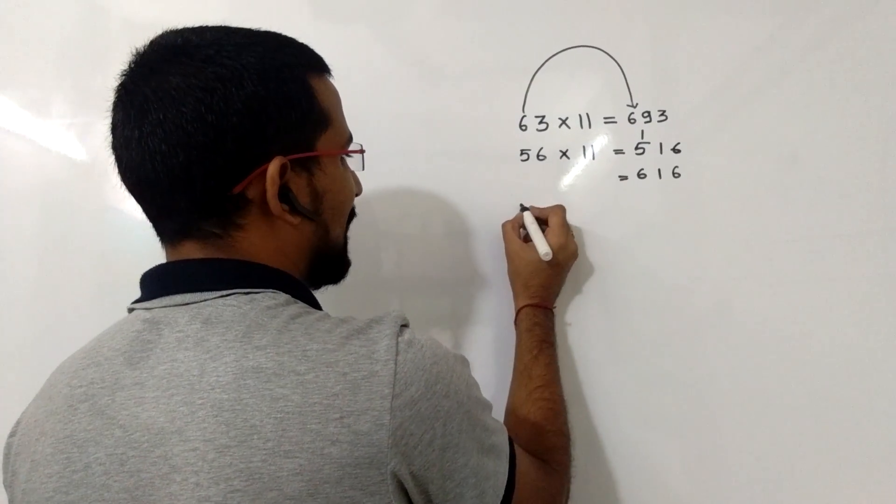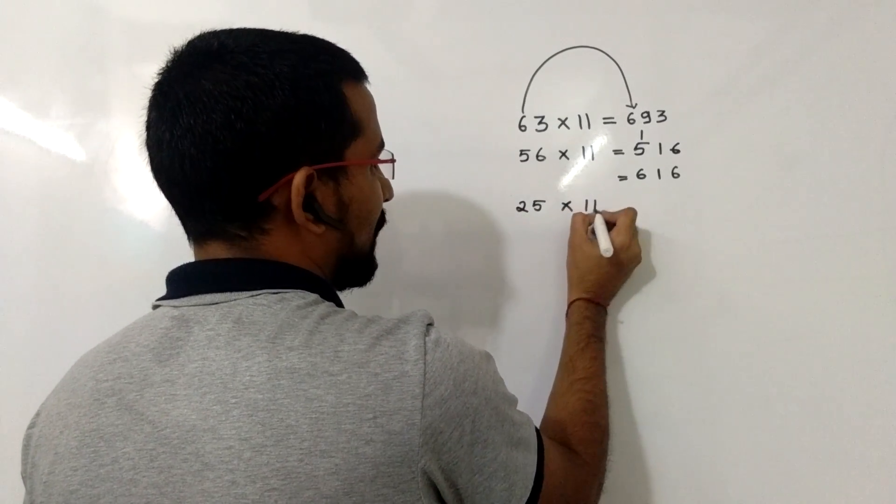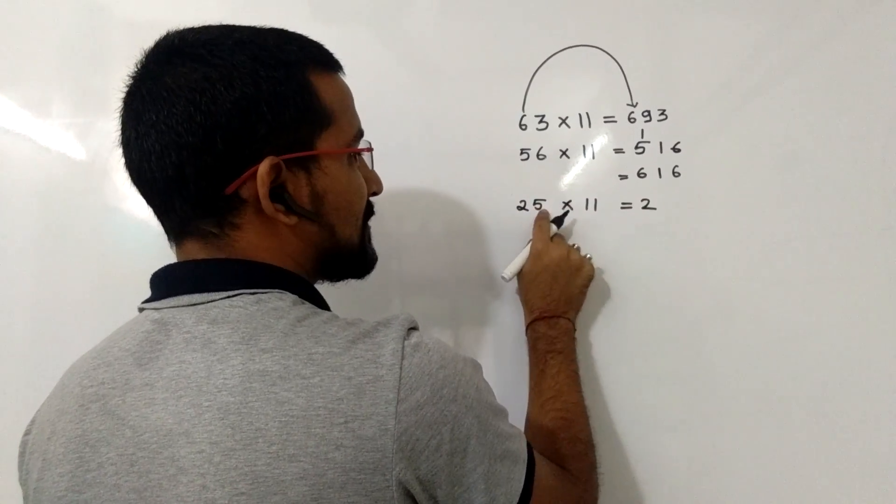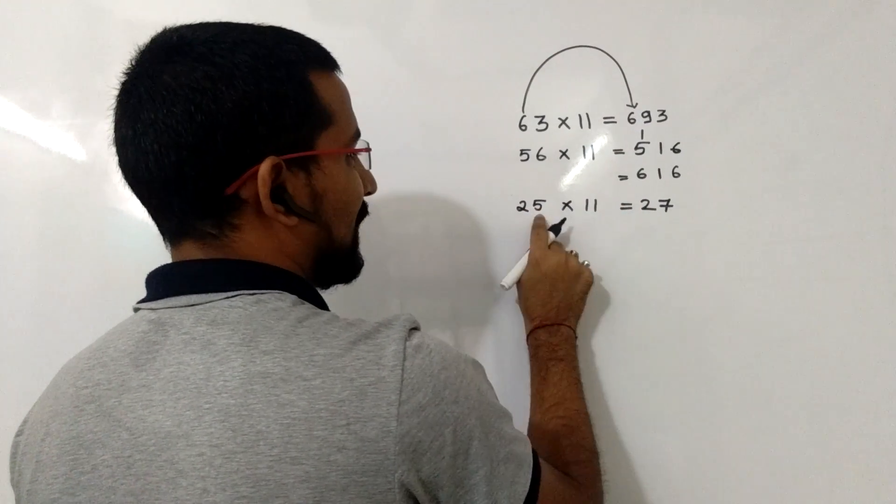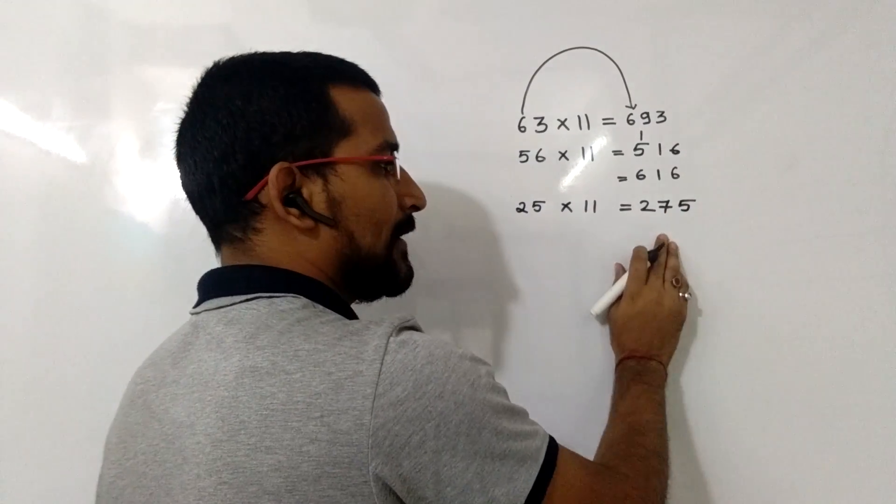Now we will take another example. If you want to multiply, for example, 25 into 11. So 2 as it is, 2 plus 5 is 7, and the last digit as it is, that is 5. So the answer will be 275.